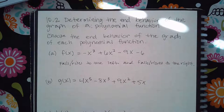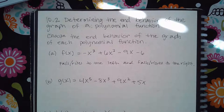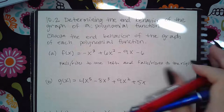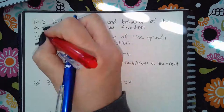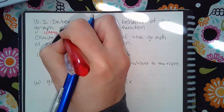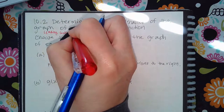Section 10.2: determining the end behavior of the graph of a polynomial function. This has to do with the leading coefficient, so in order to figure out how it's going to behave, I need to know the leading coefficient. I'm going to write these notes up here.